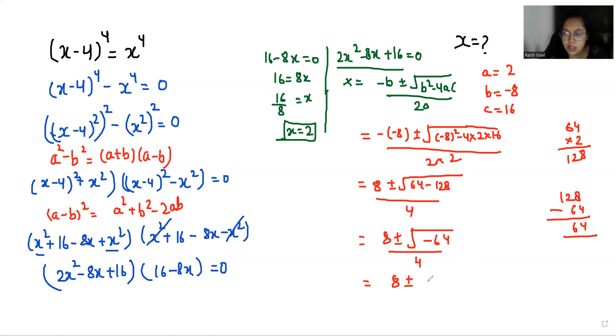So 8 ± √(64 × iota)/4, because √(-1) = iota. Now if I take 4 as common, 4 ± √(4 × iota).